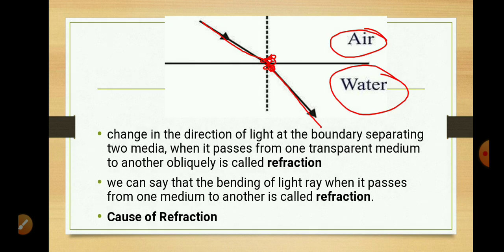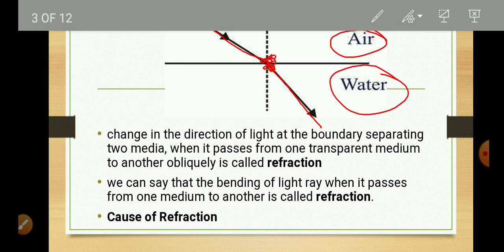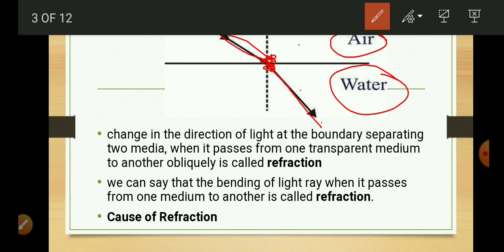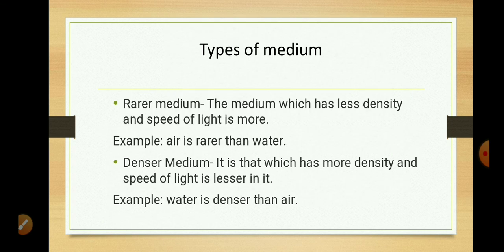Now the question arises: what is the cause of refraction? Why does refraction take place when light enters from one medium to another? The answer is that refraction takes place due to change in the speed of light. Light has different speed in different media. So speed of light in air is different from speed of light in water. As light enters from one medium to another, its speed changes, and due to this change in speed, refraction takes place.